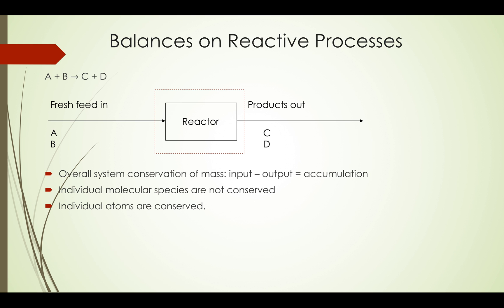Now let's talk about the last piece of this chapter: material balance on reactive processes. Suppose there's a reaction A + B to produce C + D. In the fresh feed, there's A and B into the reactor, and in the output stream, there's C and D. The overall system conservation of mass is input minus output equals accumulation. For each individual molecular species, it's not conserved because there's A in the input but no A in the output.